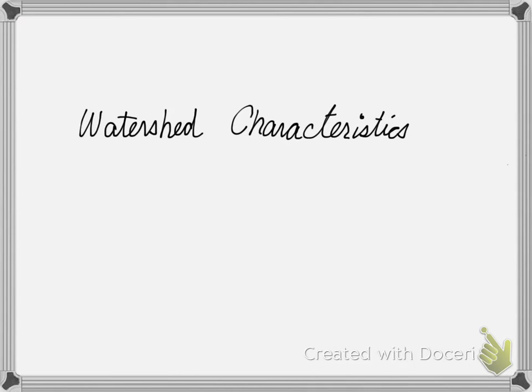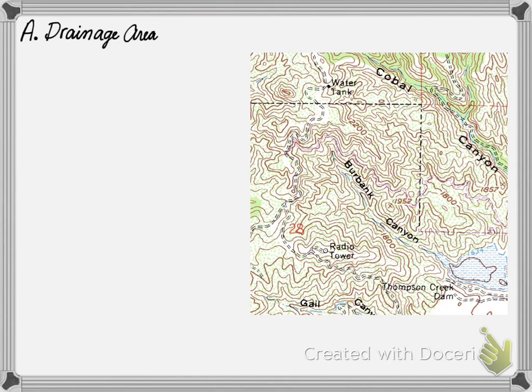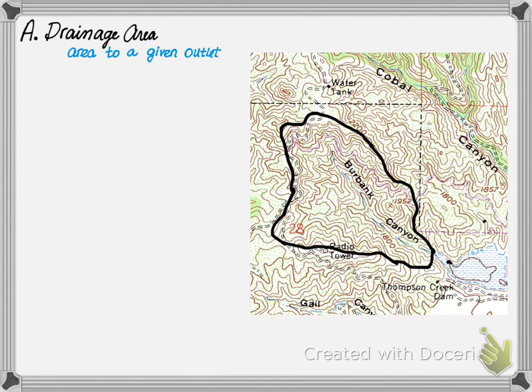After you have successfully delineated a watershed, it is essential to evaluate the characteristics of said watershed. The first characteristic to be evaluated is the watershed area, which is defined as the quantity of land which drains to a specific point of interest. From the Burbank Canyon delineation, we delineated a watershed to an outlet point, which was the reservoir. Now, we will measure the area to that given outlet.